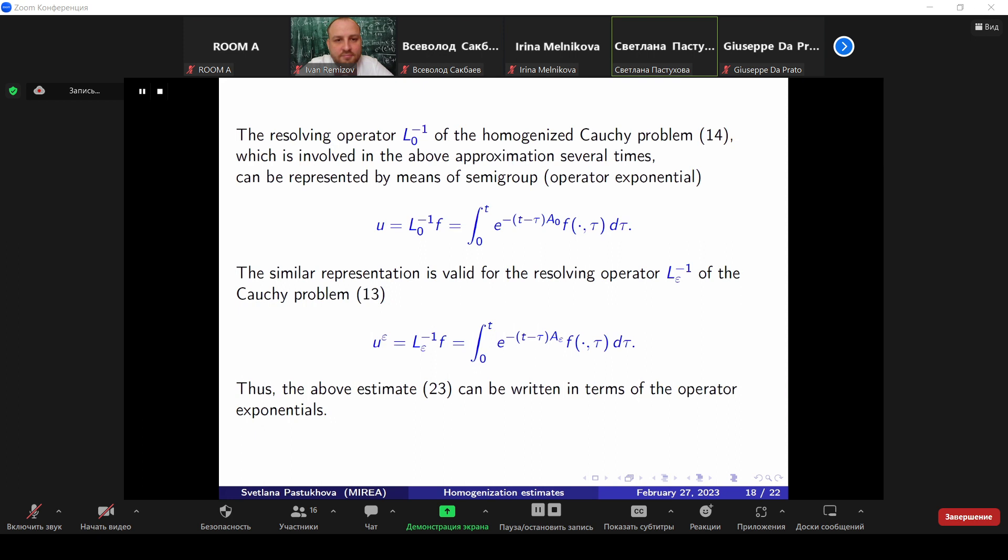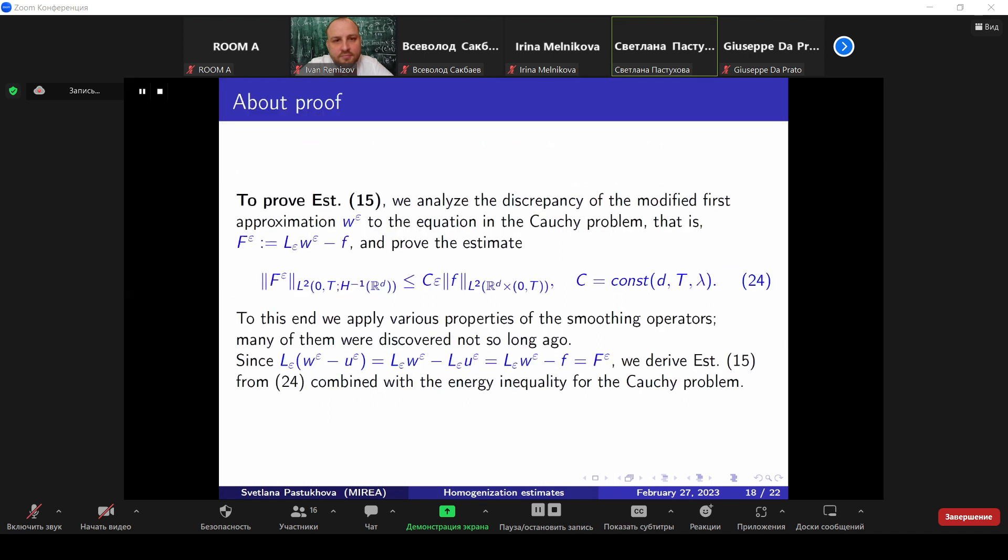The coefficients of this operator are constant. They can be defined via the solutions to the cell problem. I don't give here the exact formula, but this formula is in terms of mean value of some periodic functions composed of the solutions to cell problems. And the main result of my talk is estimate 23, where you see the approximation of the resolving operator of the initial Cauchy problem as the sum of the resolving operator of the homogenized Cauchy problem and three correctors. The resolving operators of the Cauchy problem when the Cauchy data is zero can be expressed in terms of semi groups. I give here the formula and we can formulate all our results in terms of semi groups. But this formulation will be rather cumbersome. So I avoid them.